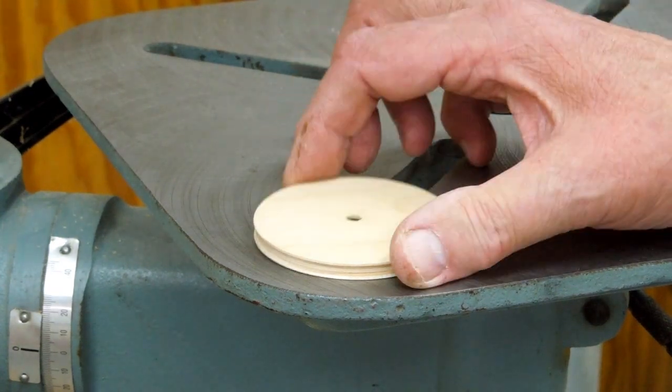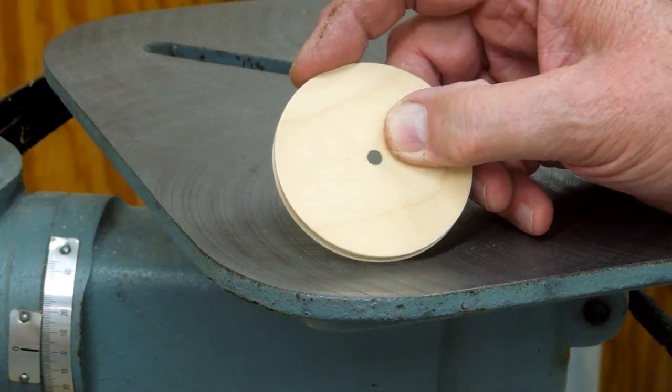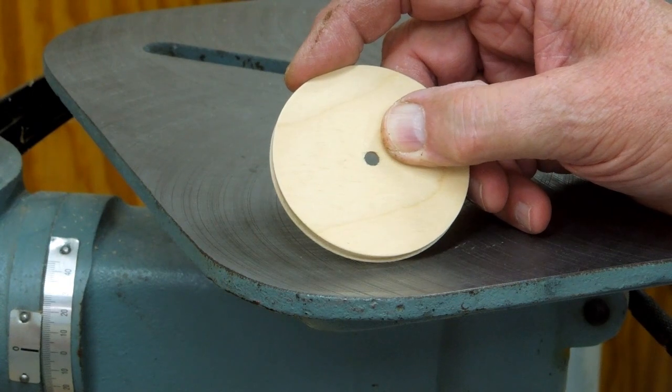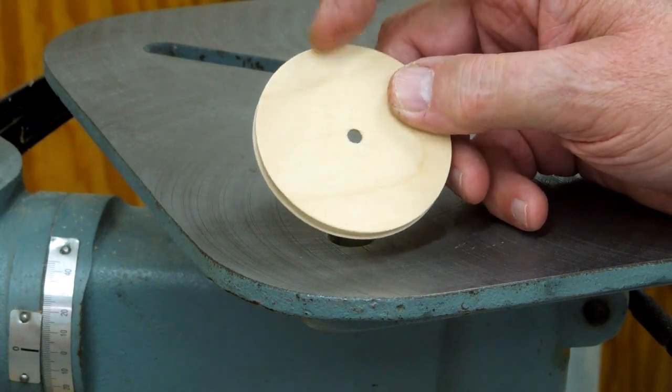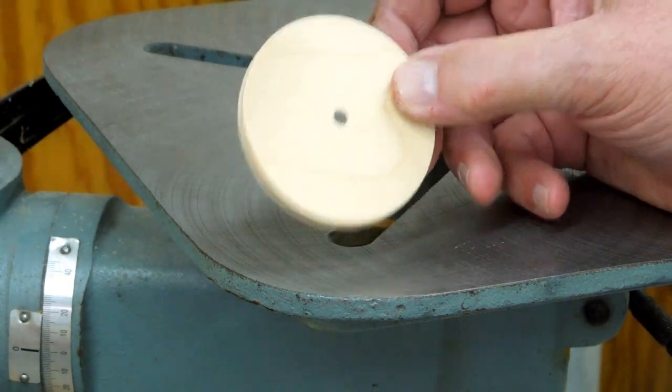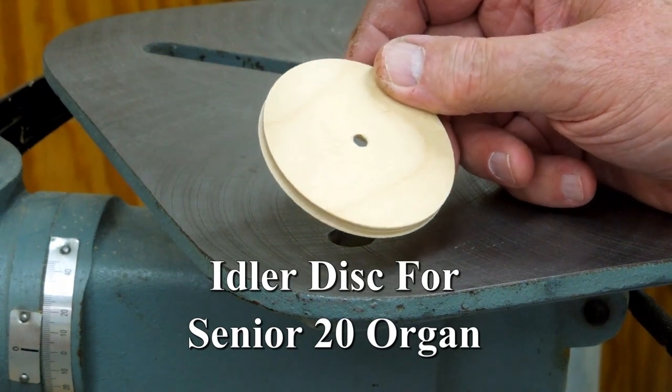Occasionally, you'll drill a hole in something and it'll end up being the wrong size hole, too small. Or you'll change the design altogether, as in the case of this idler disc for the Senior 20.